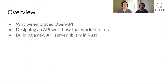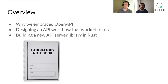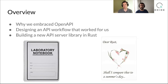We're going to be talking about Contract as Code as Contract, and to explain a bit about what we're going to talk about today, we're going to cover why we embraced OpenAPI, designing an API workflow that worked for us and our product and our team, and then how and why we built an API server in Rust. You can think of this as half experience report and half love note to Rust.